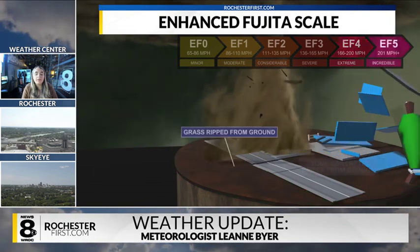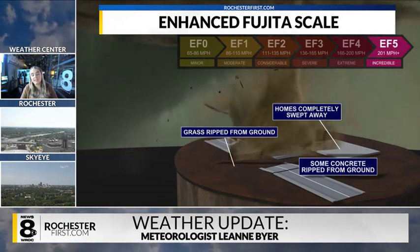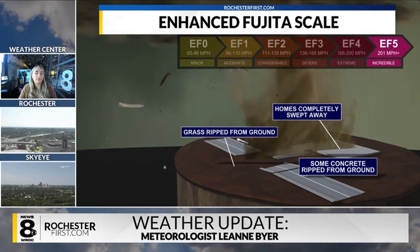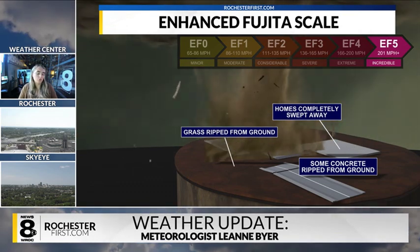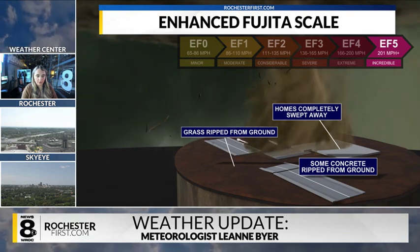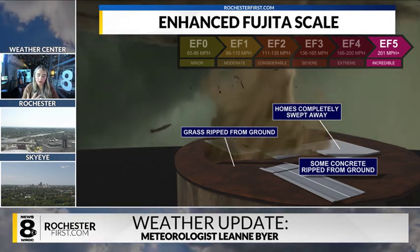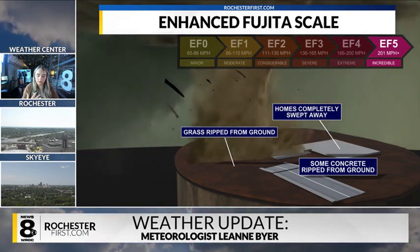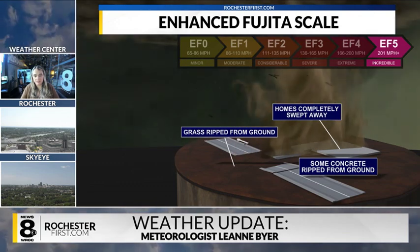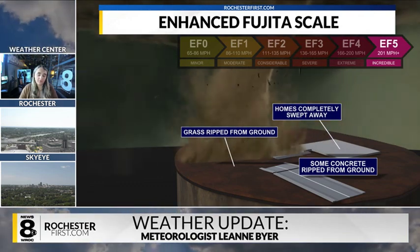Now heading to our last category, which is indeed catastrophic: EF5 tornadoes. You don't hear about them a lot — it's the same thing with a category 5 hurricane. They are very rare, but when they happen, they make headlines because they are so catastrophic.